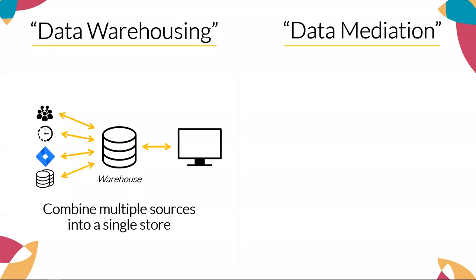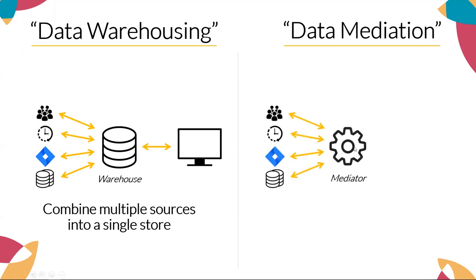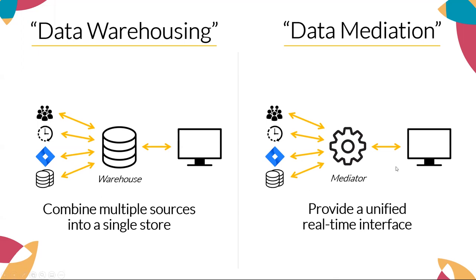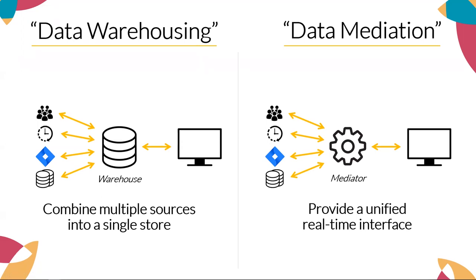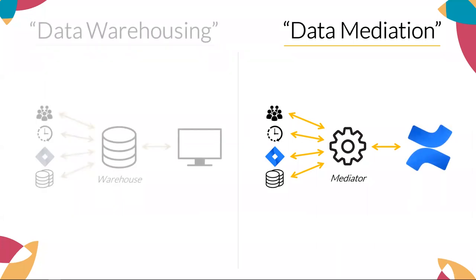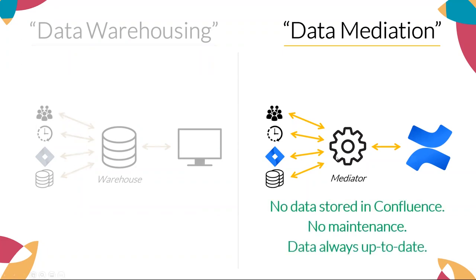Now let's look at the data mediation approach. The main difference is that we aren't storing any data. Instead, we put a mediator in front of our data sources that provides an abstracted, real-time interface to our application. This basically routes requests through to each source every time the application tries to access data. For the data integration framework we want to build for Confluence, this makes the most sense — it's more lightweight, there are fewer maintenance aspects, and the data displayed in Confluence will always be up to date.